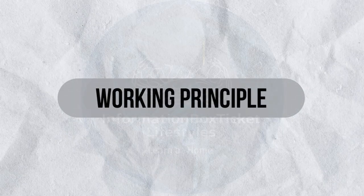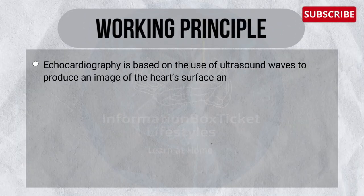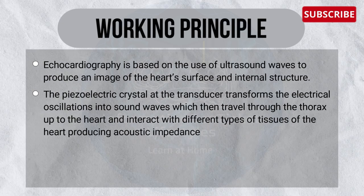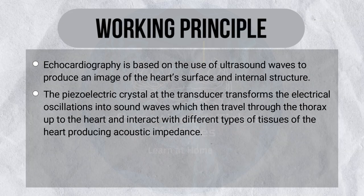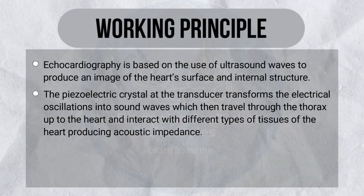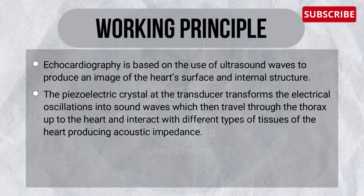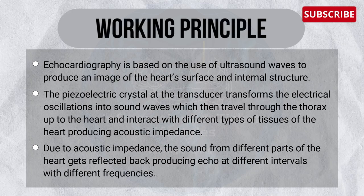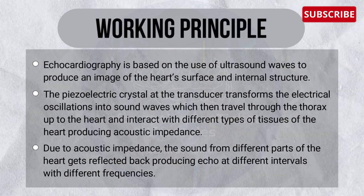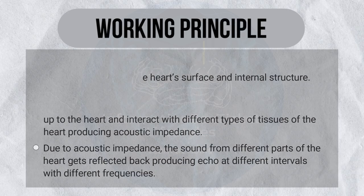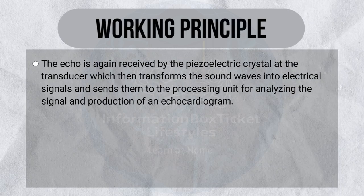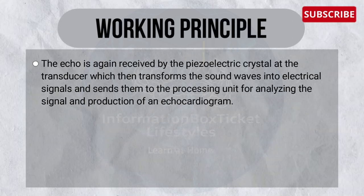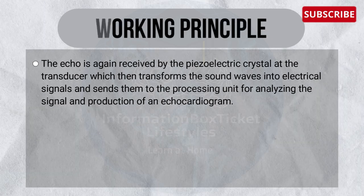Let's learn the working principle behind echocardiography. It is based on the use of ultrasound waves to produce an image of the heart's surface and internal structure. The piezoelectric crystals at the transducer transform electric oscillations into sound waves, which travel through the thorax to the heart and interact with different types of heart tissue, producing acoustic impedance. Due to this acoustic impedance, sound from different parts of the heart gets reflected back, producing echoes at different intervals with different frequencies. The echo is again received by the piezoelectric crystals, which transform the sound waves into electrical signals and send them to the processing unit for analysis and production of an echocardiogram.